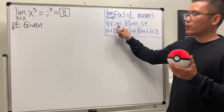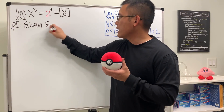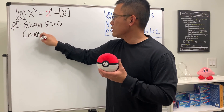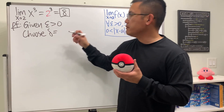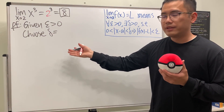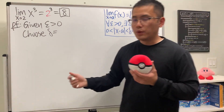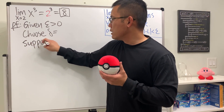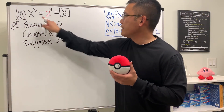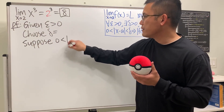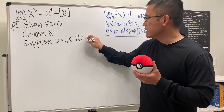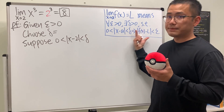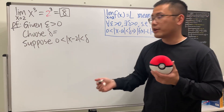Given epsilon greater than zero — that's always the case. Then we say 'choose delta,' which we don't know yet, so just leave it for now. We need the assumption, so we say 'suppose' absolute value of x minus 2, and we have to make sure that is less than delta. Lastly, we will check it.